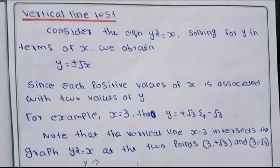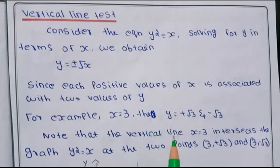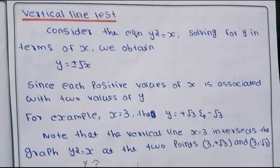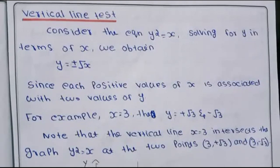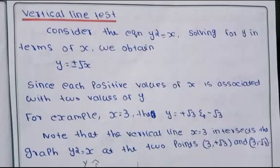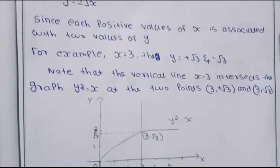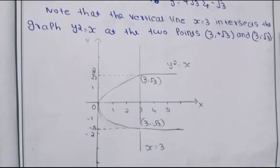If we take this equation, we get two y values for a single x value. For example, when x is equal to 3, we get y equal to plus root 3 and minus root 3. That means a vertical line at x = 3 touches the curve at two points. Because one x value maps to two y values, this is not a function.